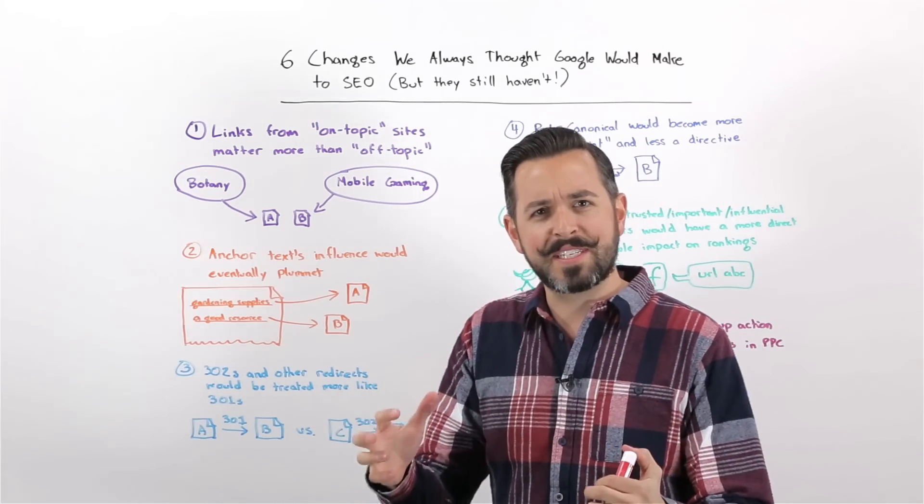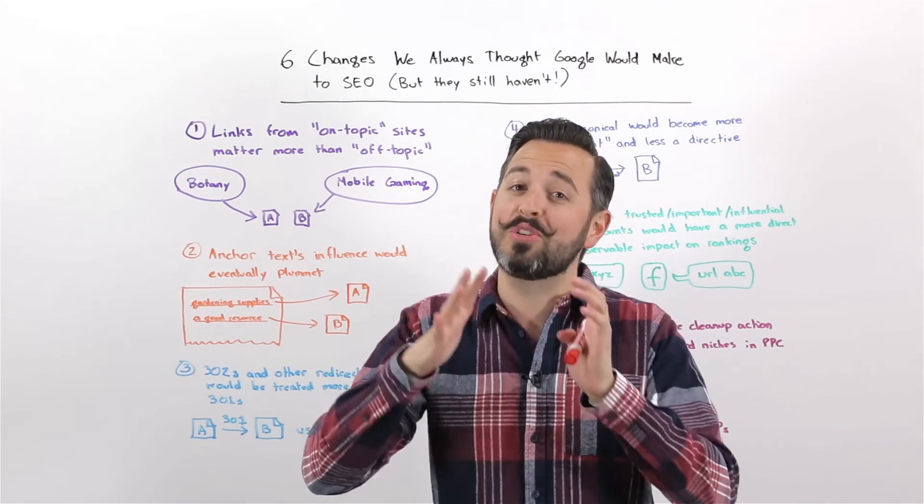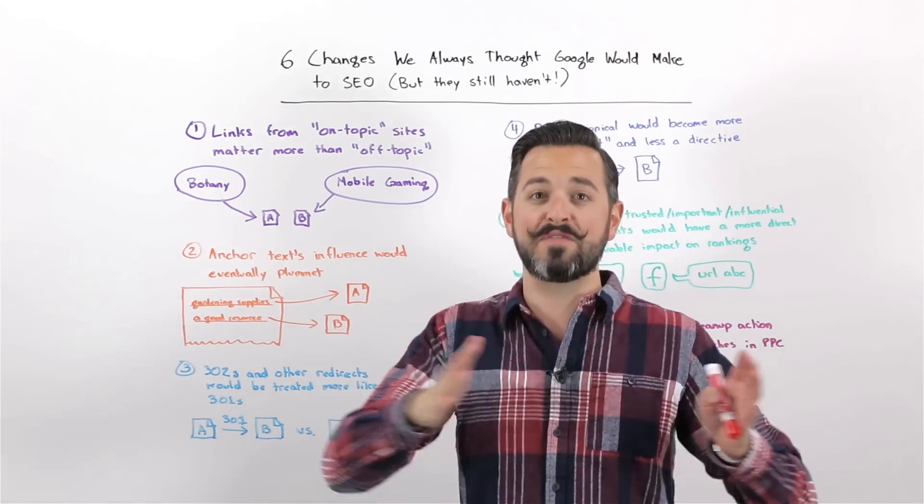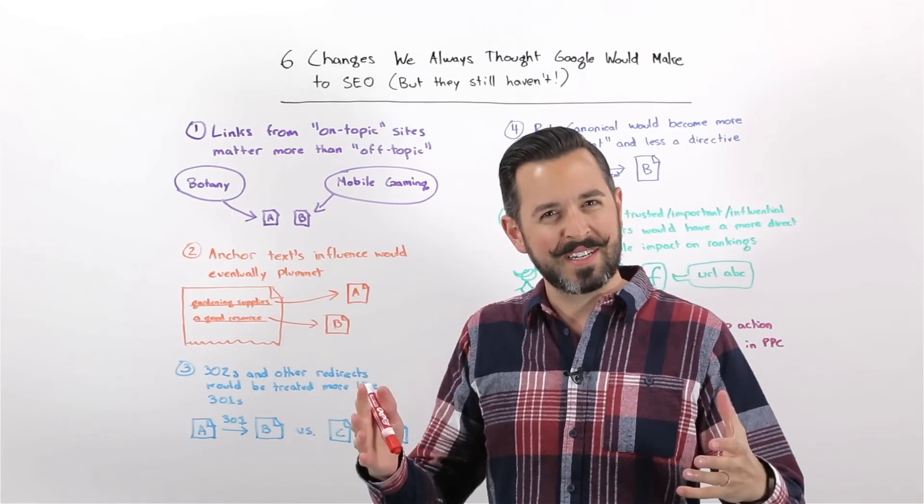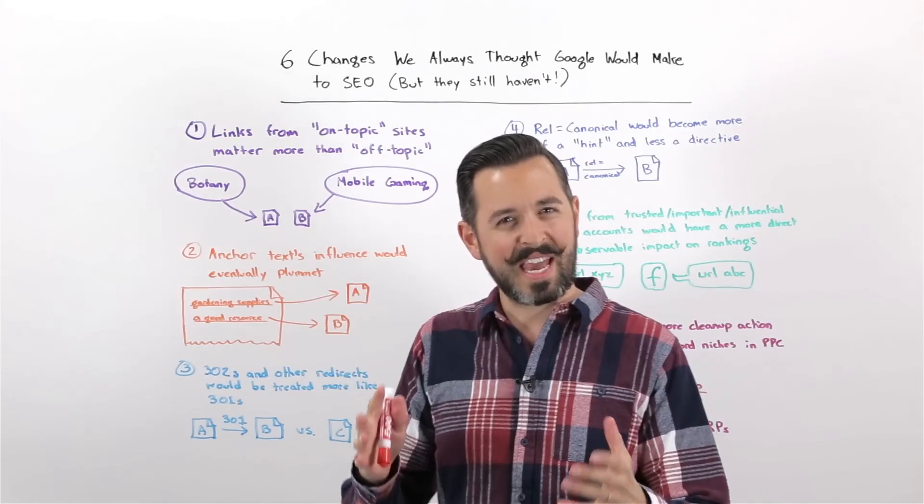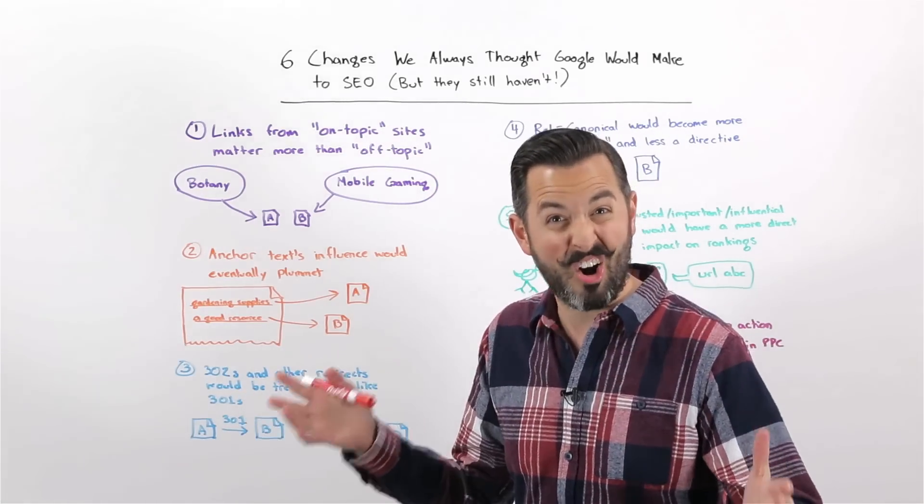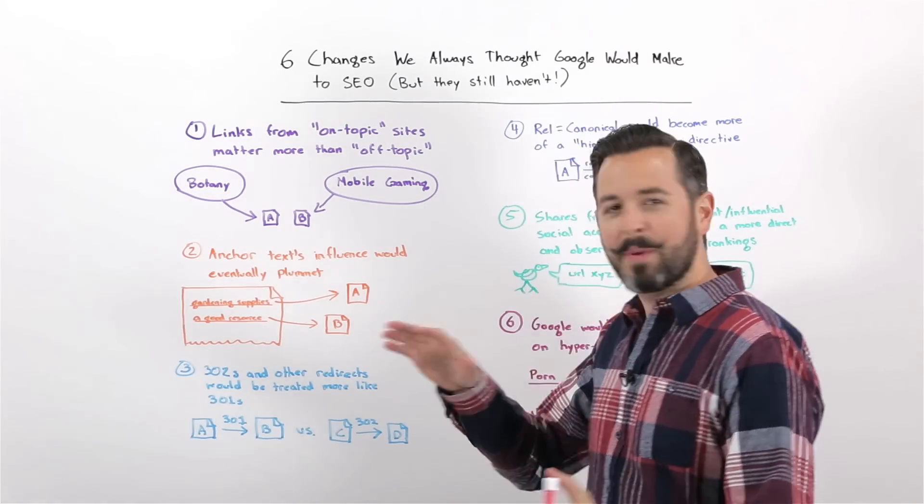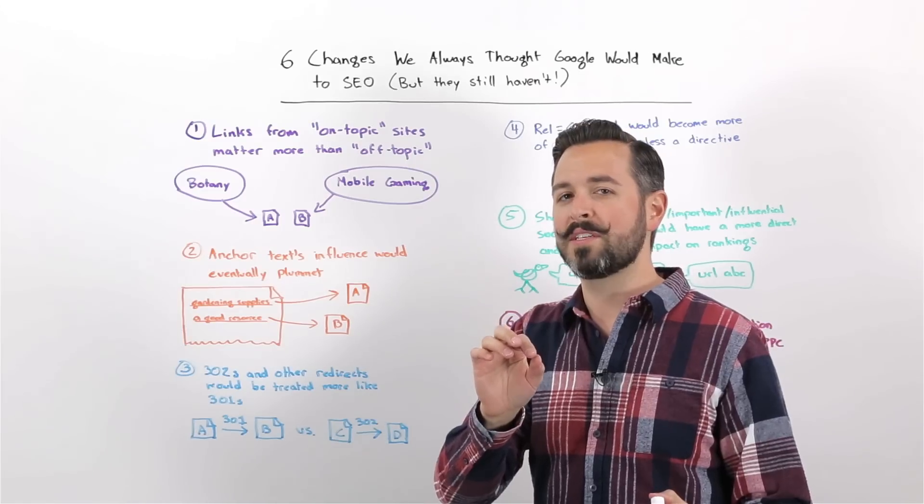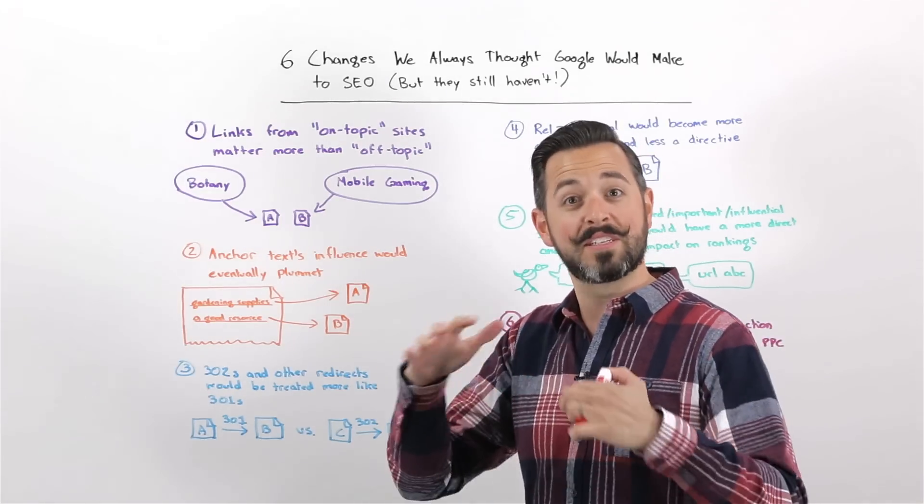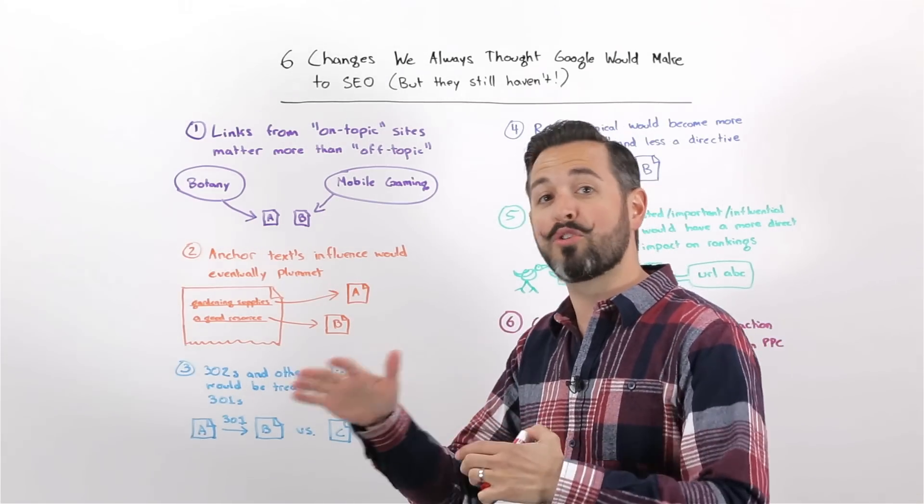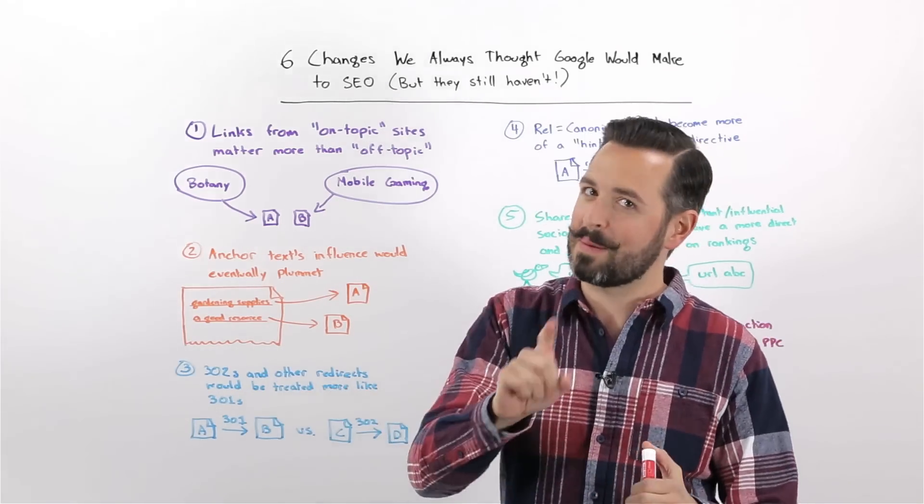And people have this idea that Google must be doing these things, must have made these advancements over the years, but it turns out, in actuality, they haven't made them. Some of them, there's probably really good reasons behind it, and some of them might just be because they're really hard to do. But let's talk through a few of these, and in the comments, we can get into some discussion about whether, when, or if they might be doing some of these.